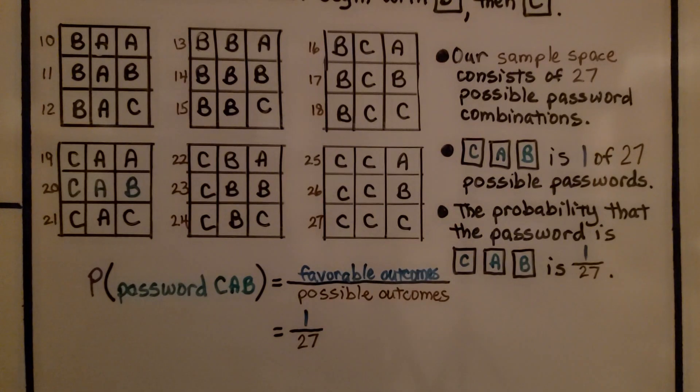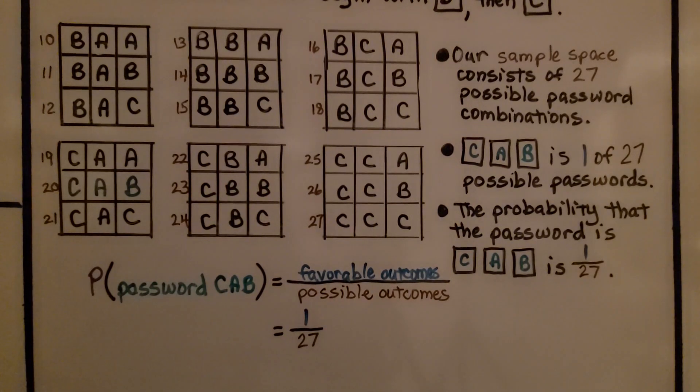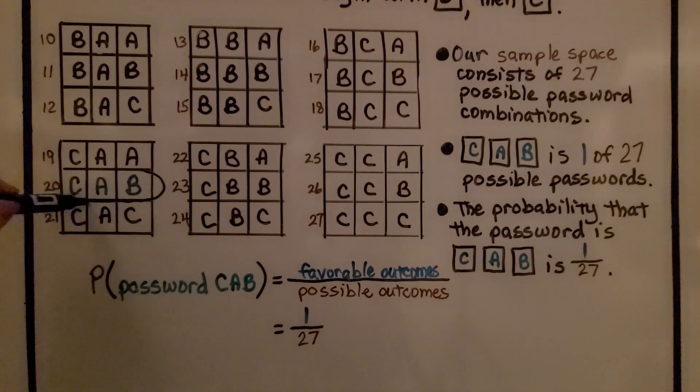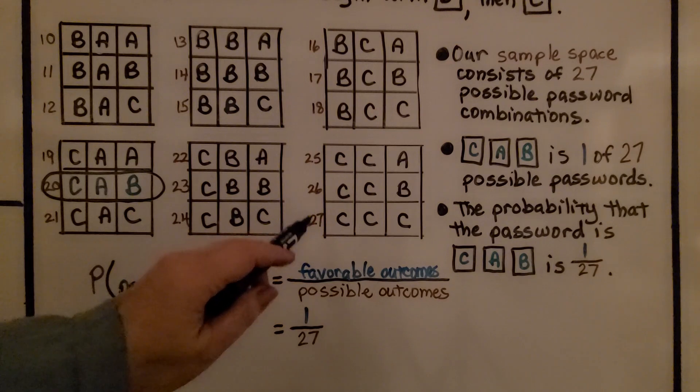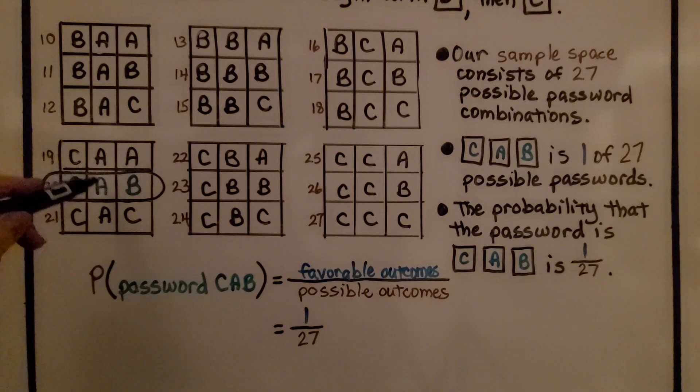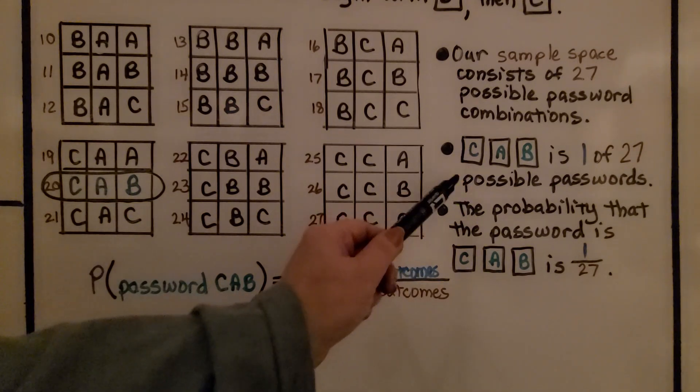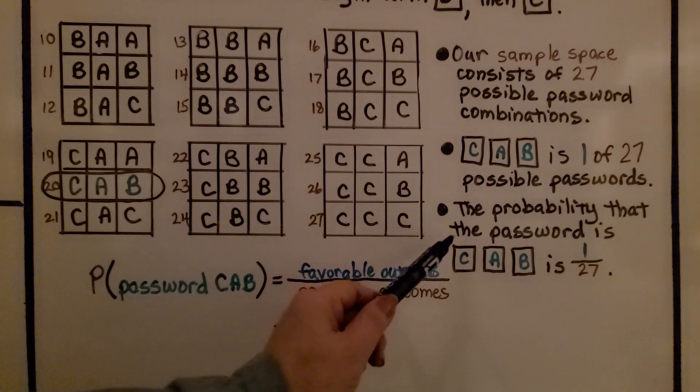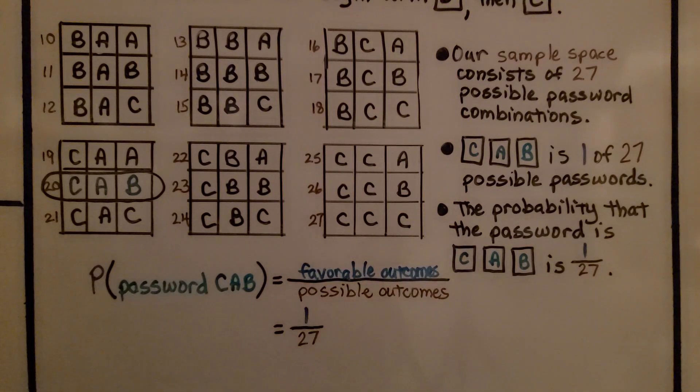Now it told us in the beginning that we needed to find the probability that the password is C, A, B, and here it is. We have twenty-seven possible passwords and one of them is C, A, B. C, A, B is one of twenty-seven possible passwords. The probability that the password is C, A, B is one twenty-seventh.